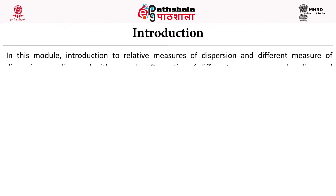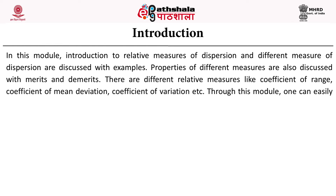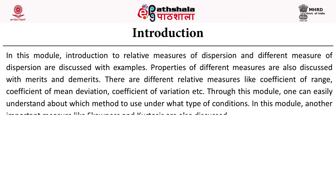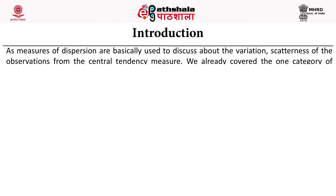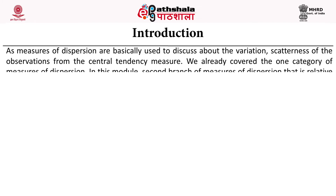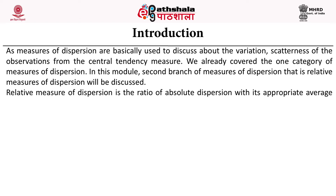In this module, introduction to relative measure of dispersion and different measures of dispersion are discussed with examples. Properties of different measures are also discussed with merits and demerits. There are different relative measures like coefficient of range, coefficient of mean deviation, coefficient of variation, etc. Through this module one can easily understand which method to use under what type of condition. Skewness and kurtosis are also discussed. Measure of dispersion is basically used to discuss about the variation and scatterness of observations from the central tendency. In this module the second branch, relative measure of dispersion, will be discussed.